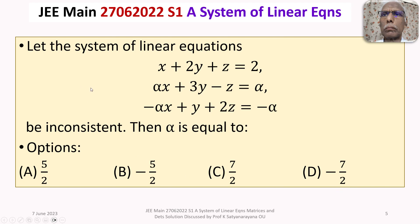We are given a system of 3 linear equations in 3 unknowns, and this system is inconsistent. We have to find alpha — that is, for what value of alpha is this given system inconsistent?